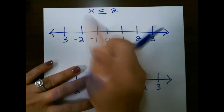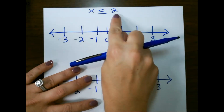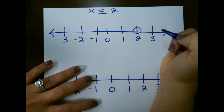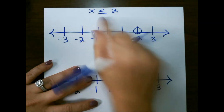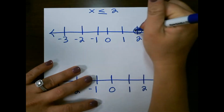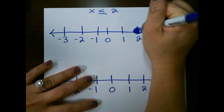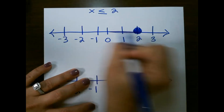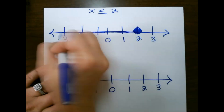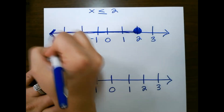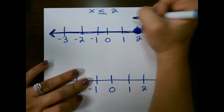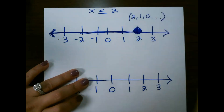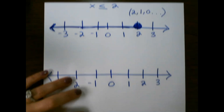For our next one, we have x is less than or equal to 2. So I put my circle on 2, and since it's less than or equal to, that means 2 can be included in the solution set, so I want to shade that in. And since it's less than, anything that's less than 2 can also be included in our solution set. So we could have 2, 1, 0, and so on and so forth in our solution set.